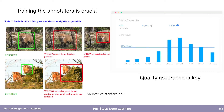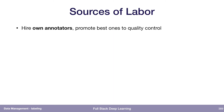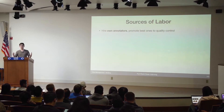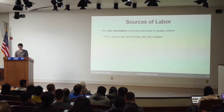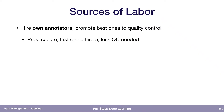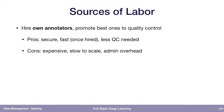Assuring quality is key — just watching your annotators and making sure they do a good job. For sources of labor, you could hire your own annotators, and you can really control the process most effectively. You can see which ones are the best, maybe promote them to quality control, have them train others. It's secure because they sign a contract with you, it's fast once you hire them, and maybe less quality control is needed because there's more trust in the system. The cons are it's expensive, slow to scale because you have to find real people, and there's admin overhead to managing the group.